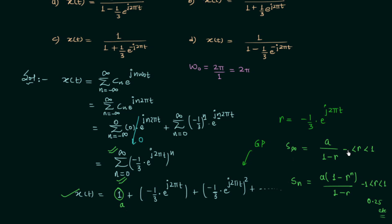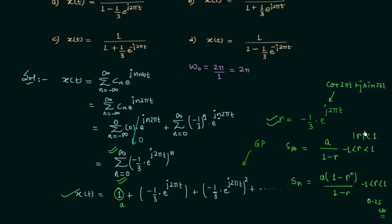In our case the common ratio r is complex, so the condition becomes |r| < 1 (modulus of r less than 1). Using Euler's formula, e^(j2πt) = cos(2πt) + j·sin(2πt). Calculating the magnitude of our common ratio −(1/3)e^(j2πt), after dividing by 3 the magnitude is always less than 1, so the condition is satisfied.